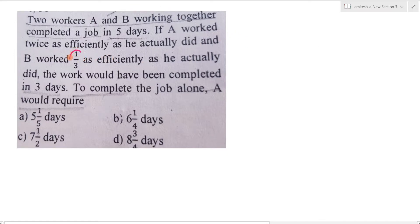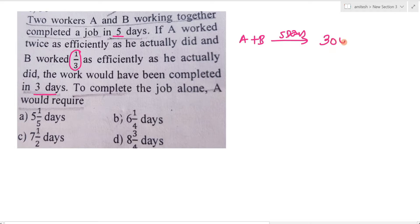यहां पे यह number 1/3, यह 5, यह अपने आप में important है, और साथ में 3 days. जब कभी भी हम unit assume करते हैं, तो ऐसा number assume करते हैं जो fraction calculation को involve न करें. यहां पे कह रहा है कि A plus B किसी काम को करने में 5 days ले रहे हैं, तो मैंने assume कर लिया कि यह हमारा 30 unit work है. तो A और B की per day efficiency होगी 30 divided by 5, that implies 6 unit.